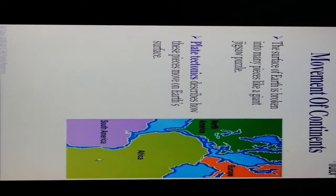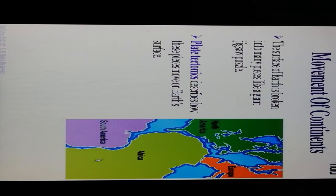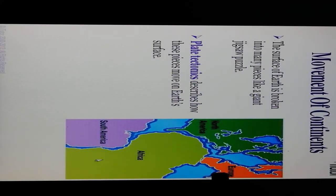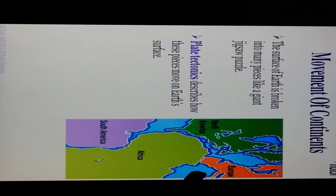The movement of continents: the surface of the Earth is broken into many pieces like a giant zigzag puzzle. These include the African plate, the Americas, India, North America, South America, and Europe. The plates are bounded by seafloor spreading. Plate tectonics describes how these pieces move on the Earth's surface.